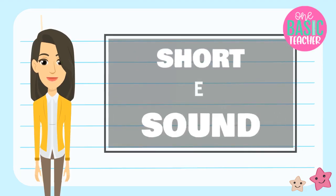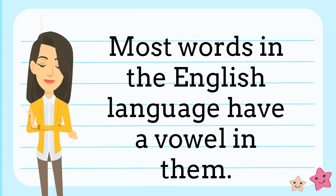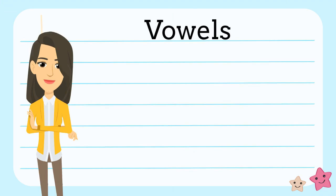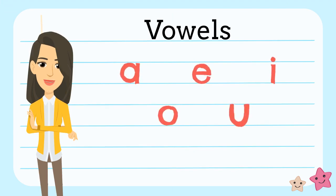In this episode, we're going to talk about the short vowel E sound. Most words in the English language have a vowel in them. The letters A, E, I, O, and U are all vowels. The letter Y is a vowel too when it isn't at the beginning of a word.